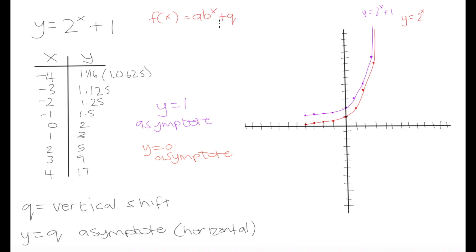Now we know the effect of q — it's our vertical shift and y = q becomes our asymptote. In the next video, we'll look at different values for a and see how that affects the appearance of the graph.